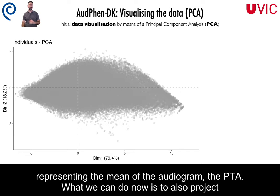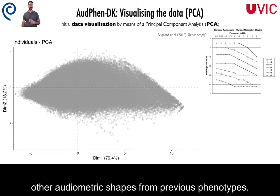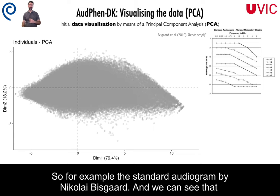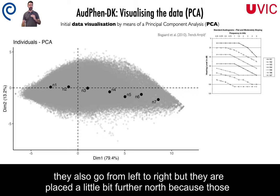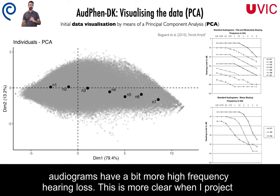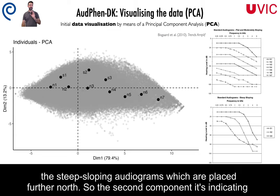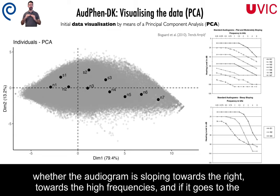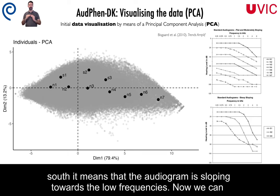What we can also do is project other audiometric shapes from previous phenotypes — for example, the standard audiograms by Nikolai Visco — and we can see that they go from left to right, but are placed a little bit farther north because those audiograms have more high-frequency hearing loss. This is clearer when I project the steep sloping audiograms, which are placed farther north. So the second component indicates whether the audiogram is sloping towards the high frequencies, or, going south, whether it slopes towards the low frequencies.